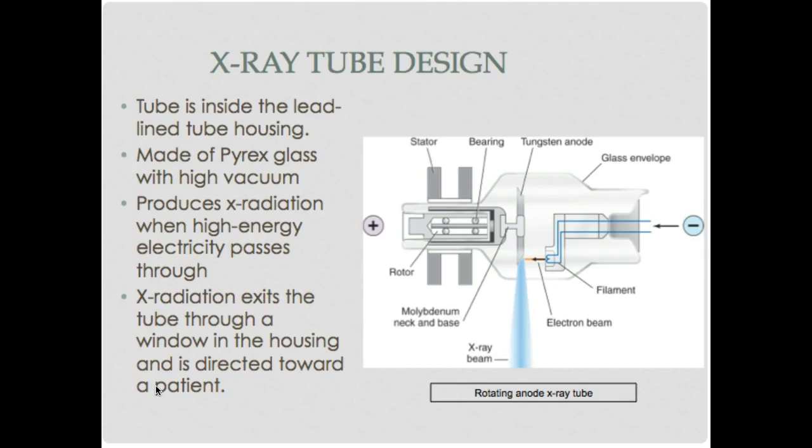The anode is a tungsten-rhenium track. Tungsten handles the high heat, and rhenium handles expansion and contraction due to that heat. There's a molybdenum base with bearings and a stator, and we use magnetic induction to spin the anode. Outside the x-ray tube there is a lead-lined tube housing to absorb and scatter radiation. X-ray radiation exits the tube through a window in the tube, and there is also a window in the housing directed toward the patient.